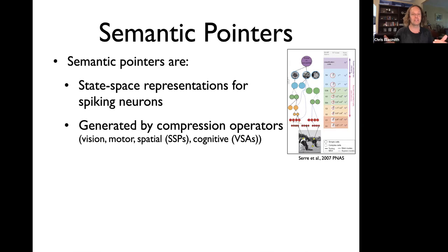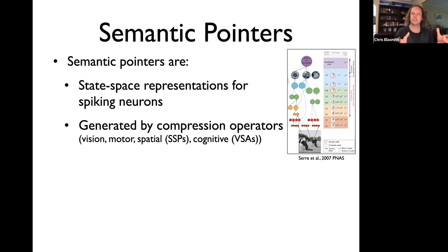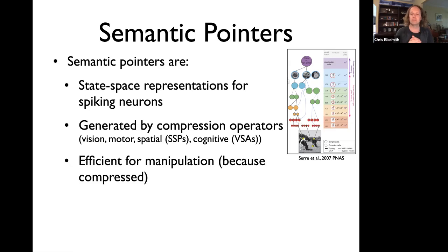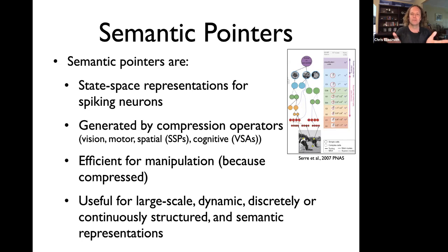One critical point is that semantic pointers are always generated by some kind of compression operator. The hypothesis is that there are different compression operators in different parts of the brain — the way you compress information in a visual system might differ from a cognitive or spatial system. In all cases, we take information — for instance, a raw input image in the visual system — and compress it down to features in a much lower dimensional space.